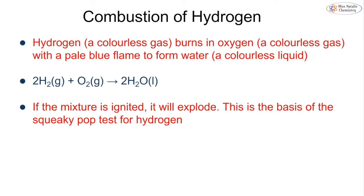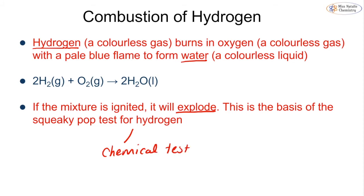We can also burn hydrogen, a colourless gas, in oxygen to get a very pale blue flame, forming water. This is a very fast reaction — essentially an explosion — so we don't always see the flame clearly, and the water produced is vaporised due to the heat. Burning hydrogen can be used as a chemical test for hydrogen, as it burns with a very distinct squeaky pop, which you will cover in topic 2H.